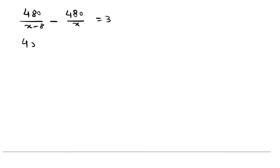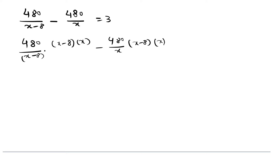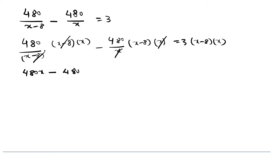Now multiplying by the LCM, that is the product of denominators (x minus 8) times x, across all the terms of this equation and then cancelling out like factors, we get 480x minus 480 times (x minus 8) is equal to 3 times (x minus 8) times x.